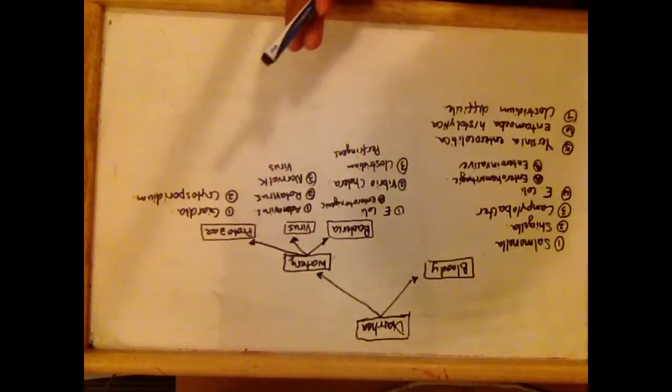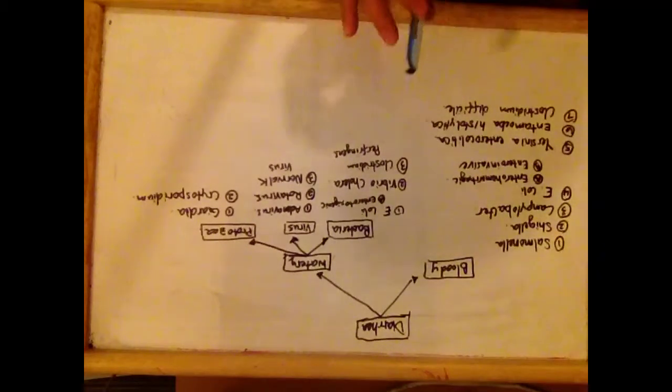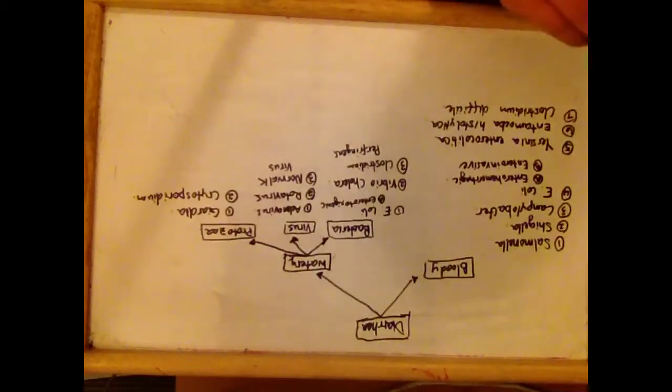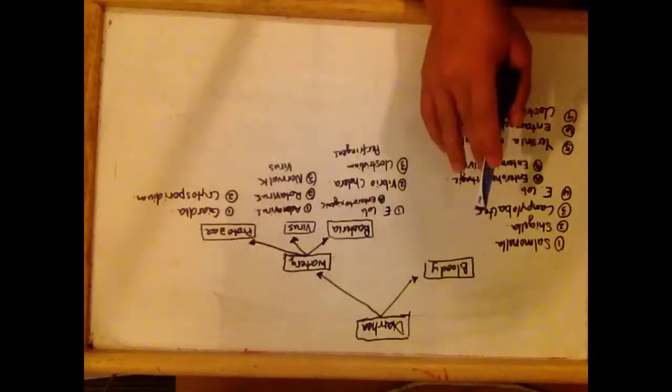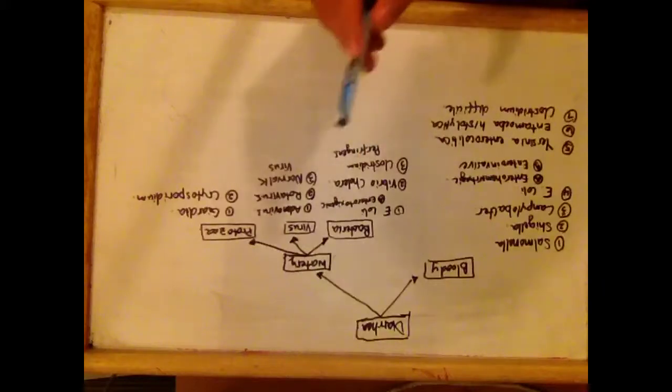Causes of diarrhea: Diarrhea can be caused by bacteria, viruses, or protozoa. Diarrhea can be characterized into either bloody diarrhea or watery diarrhea.